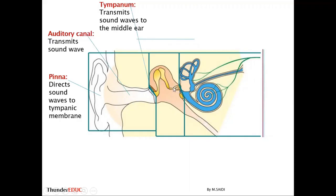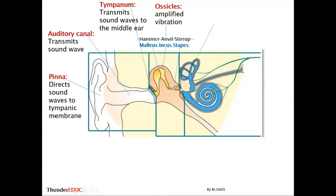The ossicles — the three bones called the malleus, incus, and stapes, sometimes remembered as MIS — amplify the vibration and transmit it to the oval window. We prefer using the terms malleus, incus, and stapes in the exam rather than the informal 'hammer' alternative.